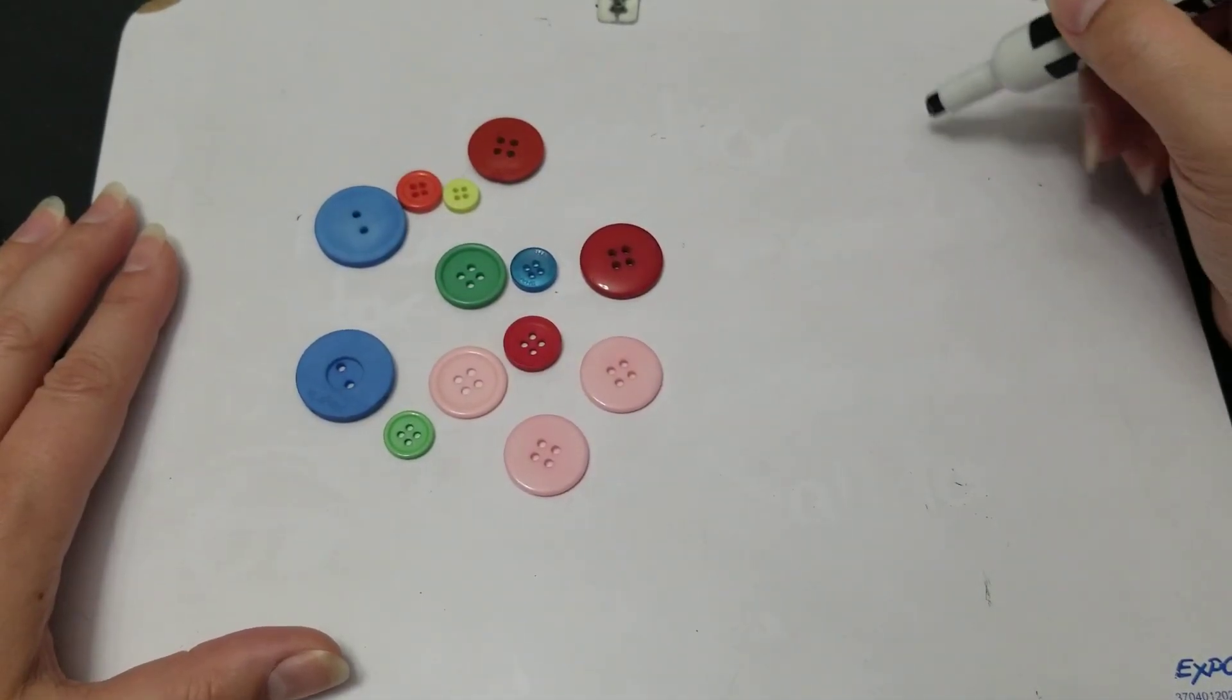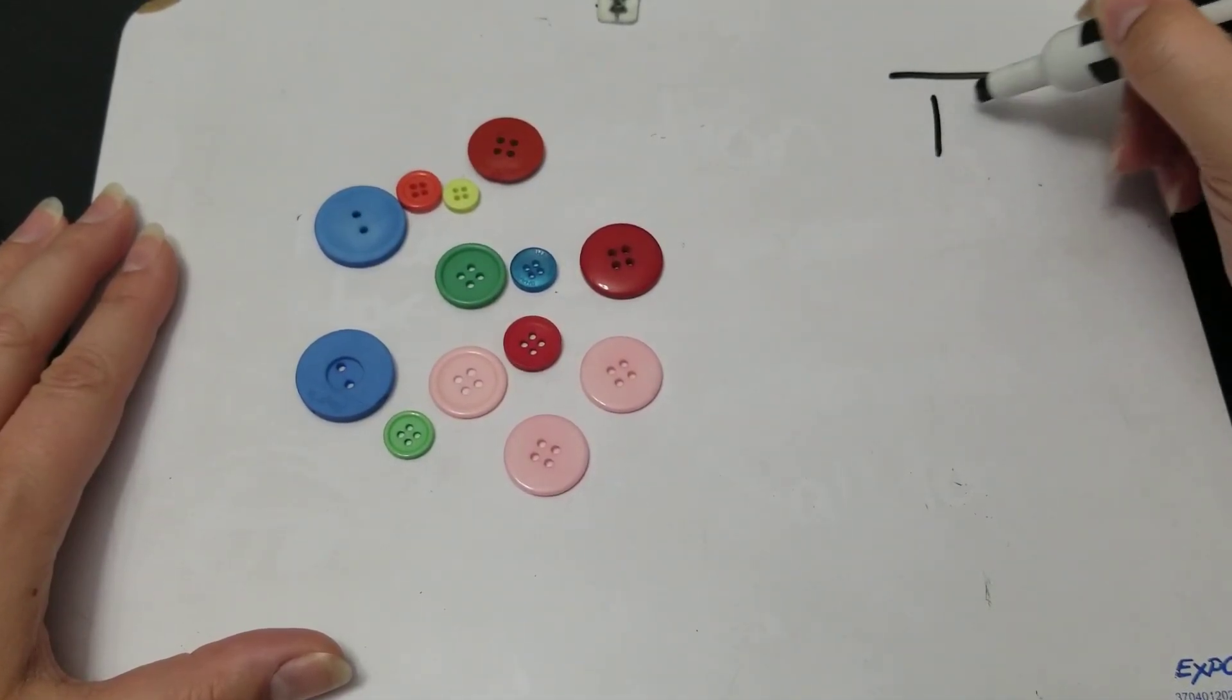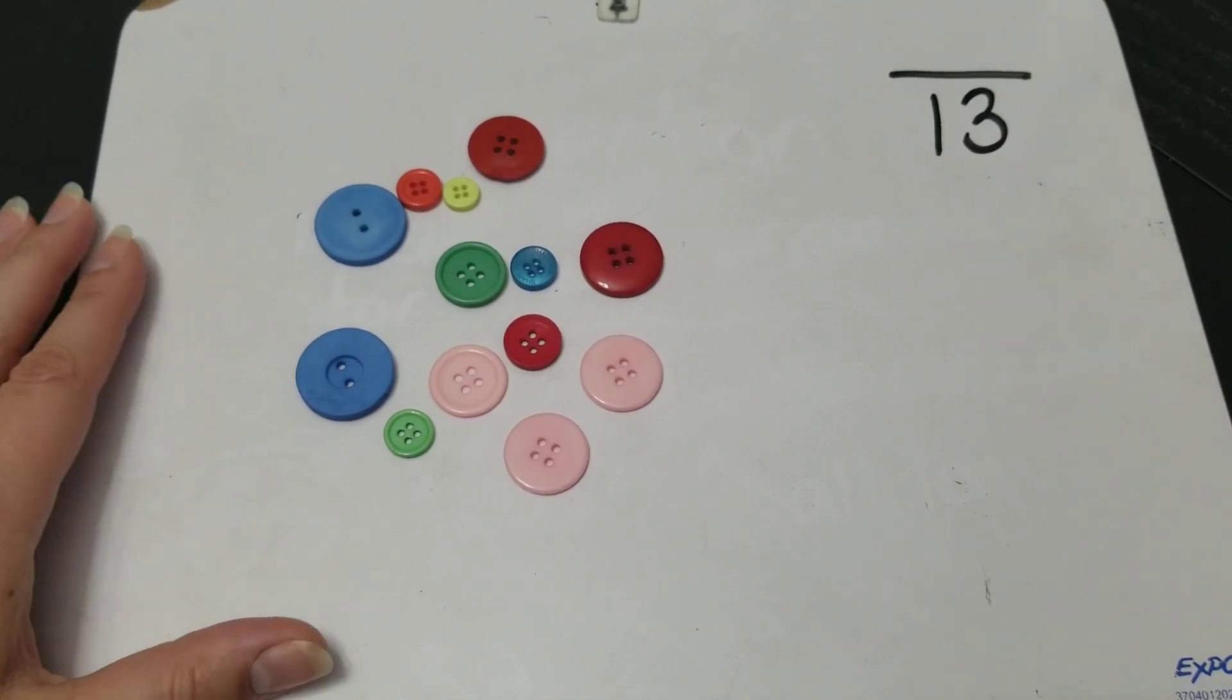So I have 13 buttons. So all of my fractions are going to have a 13 on the bottom like this.